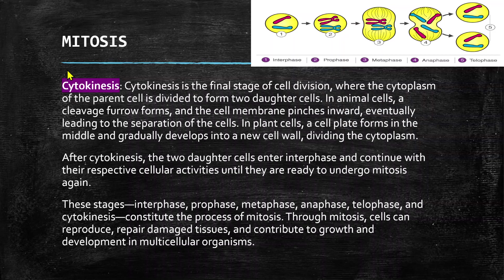In plant cells, a cell plate forms in the middle and gradually develops into a new cell wall, dividing the cytoplasm. After cytokinesis, the two daughter cells enter interphase and continue with their respective cellular activities until they are ready to undergo mitosis again.